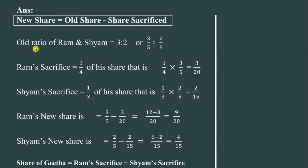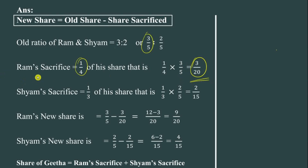We start with the old ratio of Ram and Sham, which is 3:2, written as 3/5 and 2/5. Ram sacrifices 1/4 of his share, so multiply 1/4 × 3/5 — numerator times numerator, denominator times denominator — giving 3/20 as Ram's sacrifice. Sham sacrifices 1/3 of his share (which is 2/5), so multiply 1/3 × 2/5 = 2/15 as Sham's sacrifice.